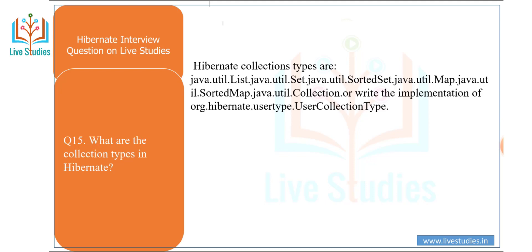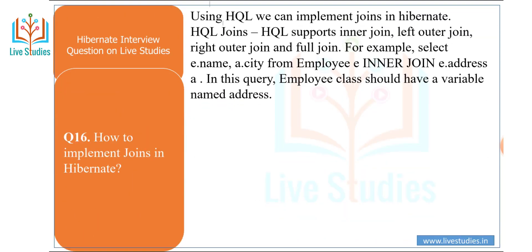Next question: what are the collection types in Hibernate? The Hibernate collection types are: java.util.List, java.util.Set, java.util.SortedSet, java.util.Map, java.util.SortedMap, java.util.Collection, or implementations of org.hibernate.usertype.UserCollectionType.